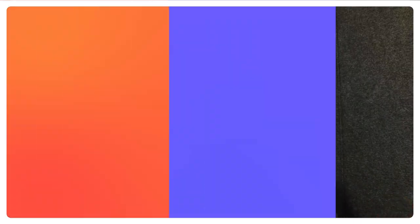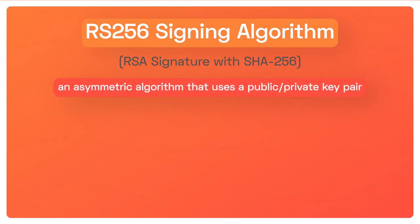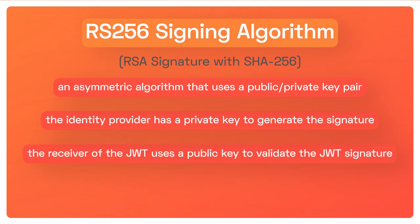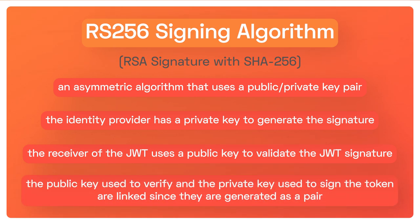Let's cover the RS-256 algorithm. RS-256, or RSA signature with SHA-256, is an asymmetric algorithm that uses a public and private key pair. The identity provider has a private key to generate the signature. Then the receiver of the JWT uses a public key to validate the JWT signature. The public key used to verify and the private key used to sign the token are linked since they are generated as a pair.